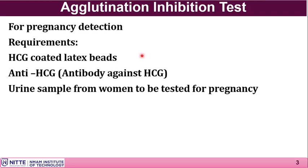HCG can be extracted and purified from the urine of pregnant women, and that purified HCG can be used to develop antibodies against it by injecting it into an animal such as rabbit, sheep, goat, or horse. The antibody developed against HCG is called anti-HCG. The anti-HCG and HCG are the two important materials required in the test kit, along with the urine sample of the woman to be tested for pregnancy.